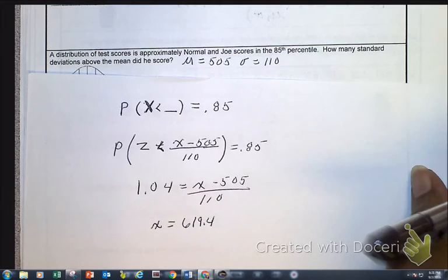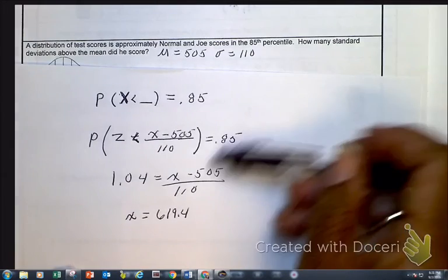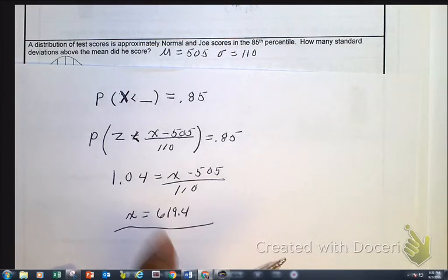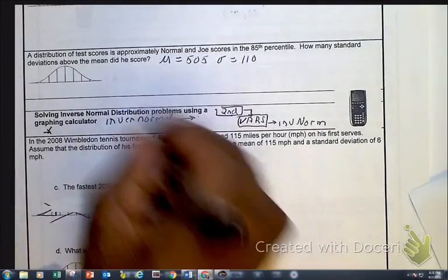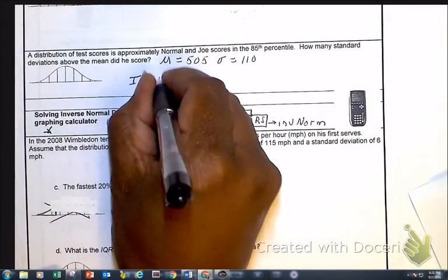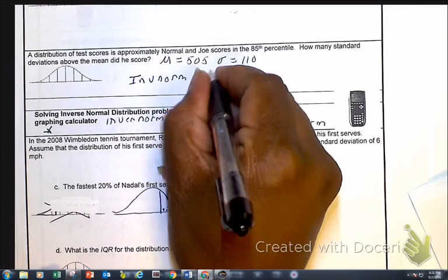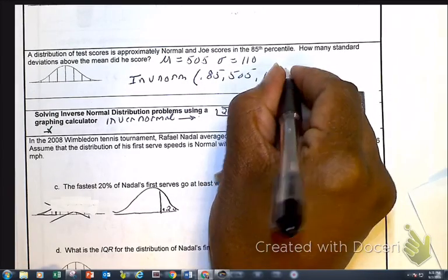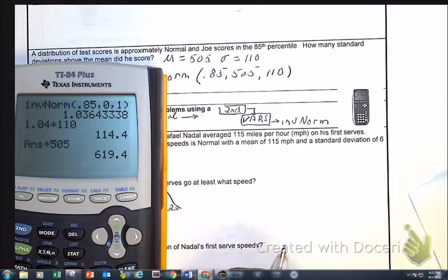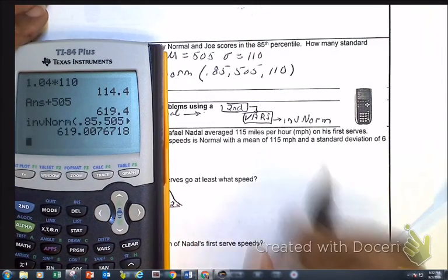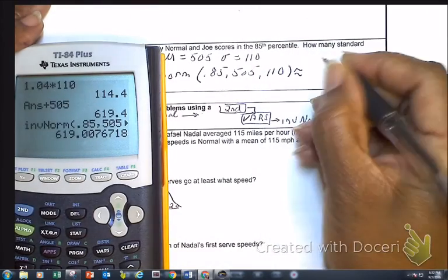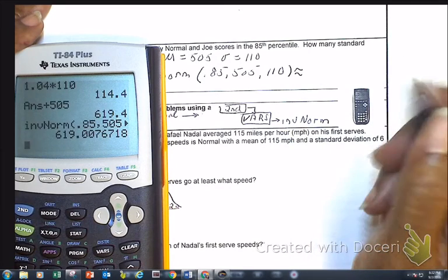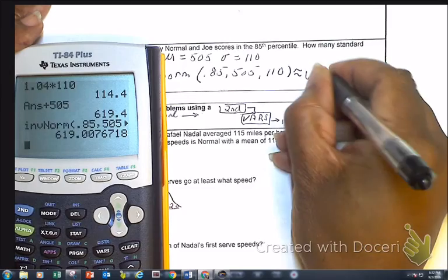So let's go with plan A because this is definitely plan B. Plan A is to do our inverse norm. And remember we're talking about the 85th percentile with the mean of 505 and the standard deviation of 100. And you can see that we have the same value. It is off a little, but the bottom line is the calculator is more precise because on that table we didn't find it exactly on 0.85. So here the score is 619.